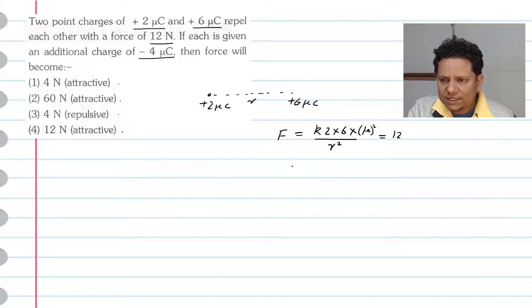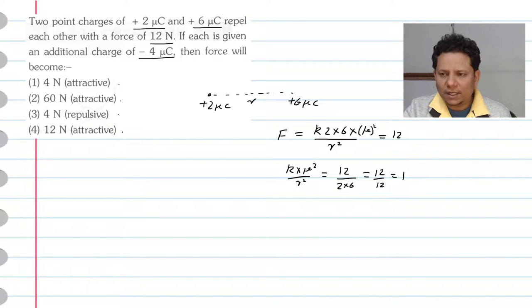Now this force will be 12 newton, which means k multiplied by micro square divided by r square equals 12 divided by 2 into 6, that will be equal to 12 by 12, which means value 1. So k by r square multiplied by 10 to the power minus 6 square, this value is 1.